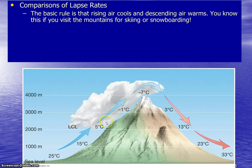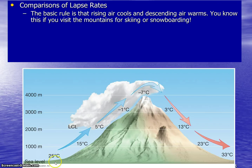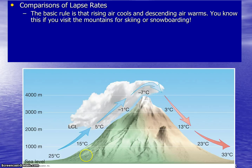What can be confusing is that on the windward side of a mountain, the temperature at sea level will actually be less than on the leeward side, which gets the rain shadow effect. In this example, you have 25 degrees Celsius at sea level. Increasing elevation by 1000 meters, you subtract 10 degrees at the dry adiabatic lapse rate to get 15 degrees Celsius. Another 1000 meters up, subtract another 10 degrees to reach 5 degrees Celsius at 2000 meters.